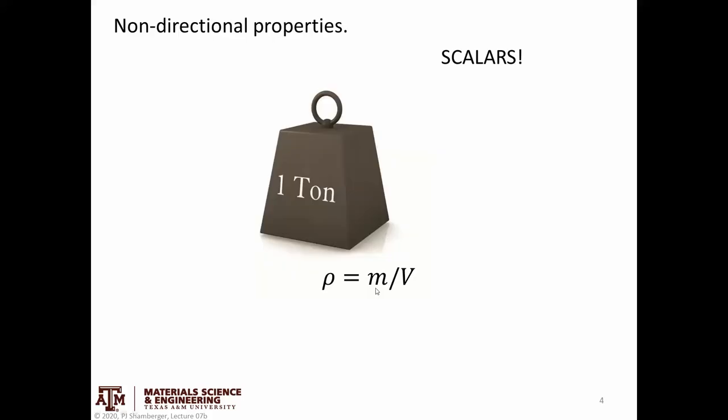So in order to get there, we need to talk about tensors. And tensors come from directional properties. So we can think about non-directional properties. We think about this all the time. For example, if I want to talk about the intrinsic property of a material and give an example that's non-directional,